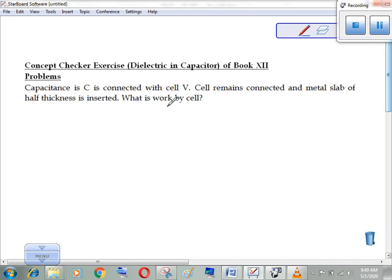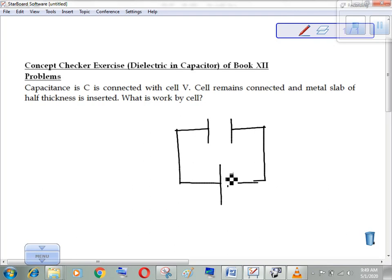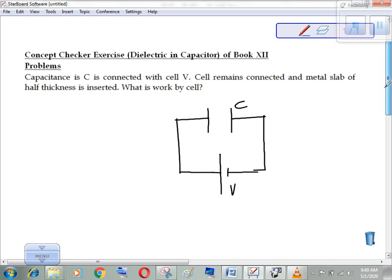Capacitance C is connected with cell V. Cell remains connected and a metal slab of half thickness is inserted. What is work by cell? This is a NEET level problem.